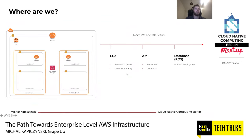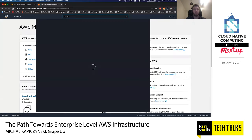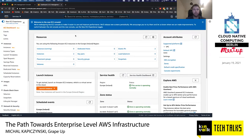Let's move to the EC2 service dashboard. EC2 stands for Elastic Compute Cloud — it's simply a virtual machine provisioned with a certain amount of resources such as CPU, memory, storage, and network capacity, launched in a selected AWS region and availability zone and managed by AWS. The elasticity means you can scale up or down resources easily depending on your needs.